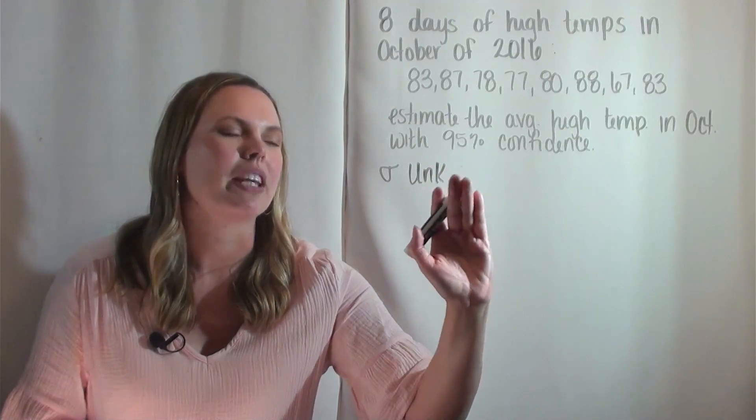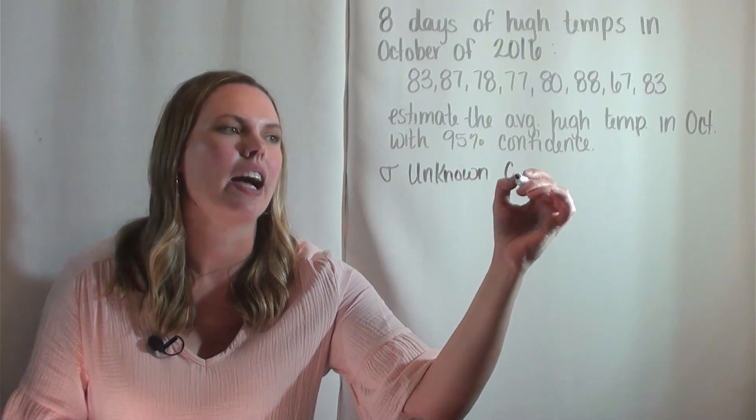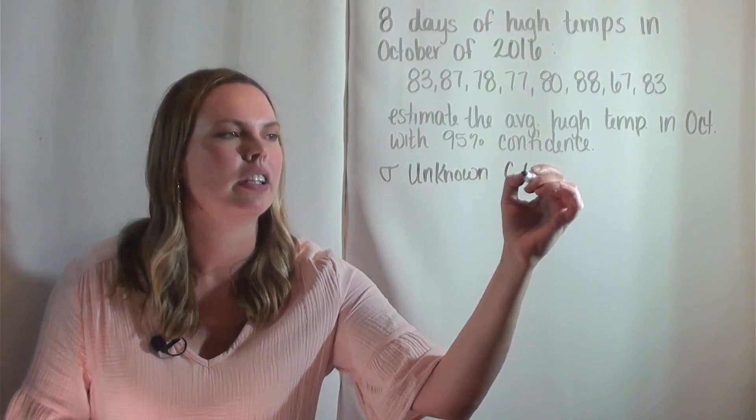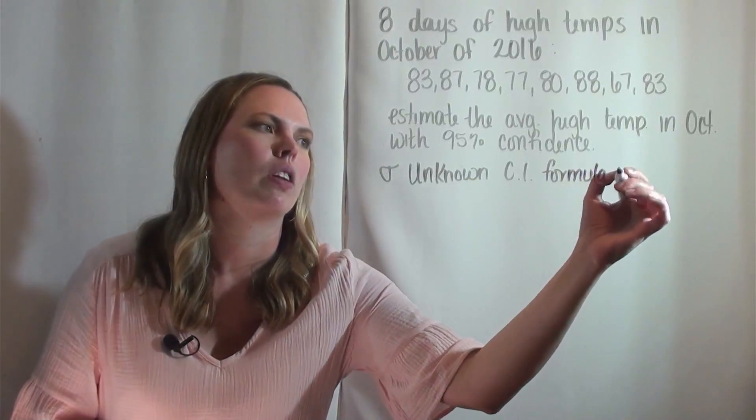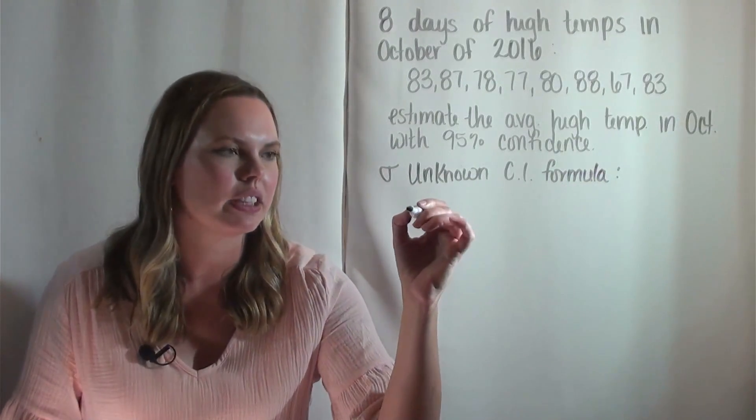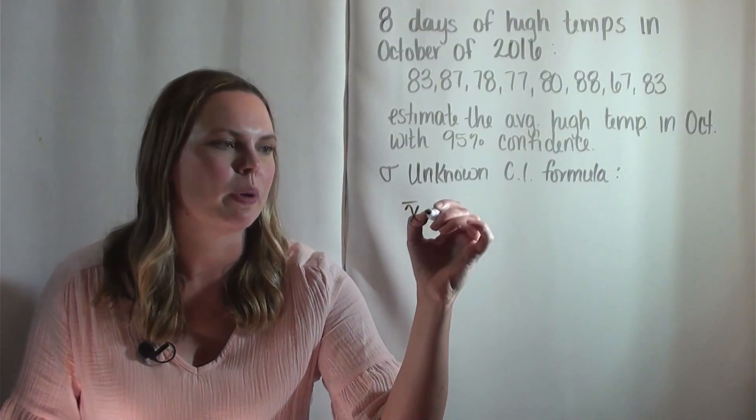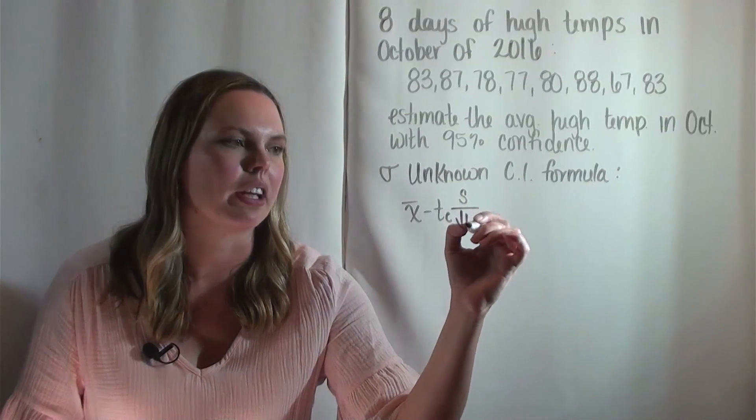I'll give you that confidence interval formula. The formula for when sigma is unknown: X bar minus T sub C times S over the square root of N.